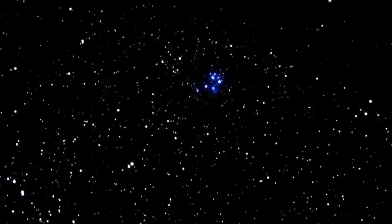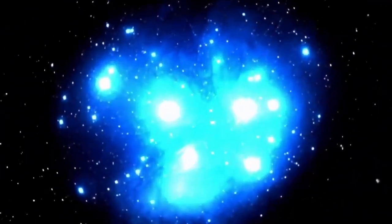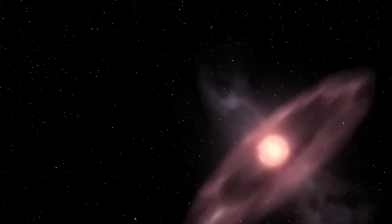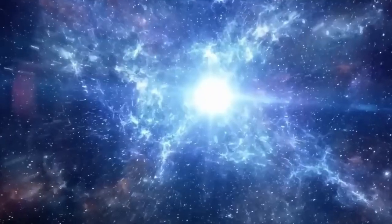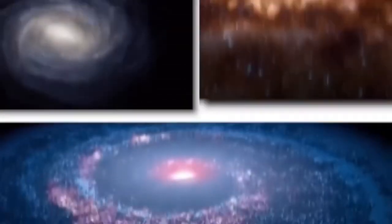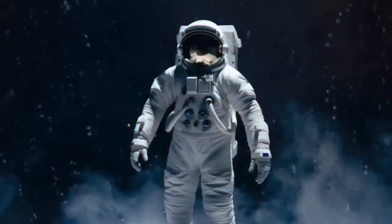This exoplanet is slightly larger than Earth, with a mass of about 30% greater than our own home planet. Its composition and potential atmosphere are areas of intense study, offering clues about its habitability. However, what really captures the imagination is its extremely fast orbit, completing one cycle in just 11.2 Earth days.